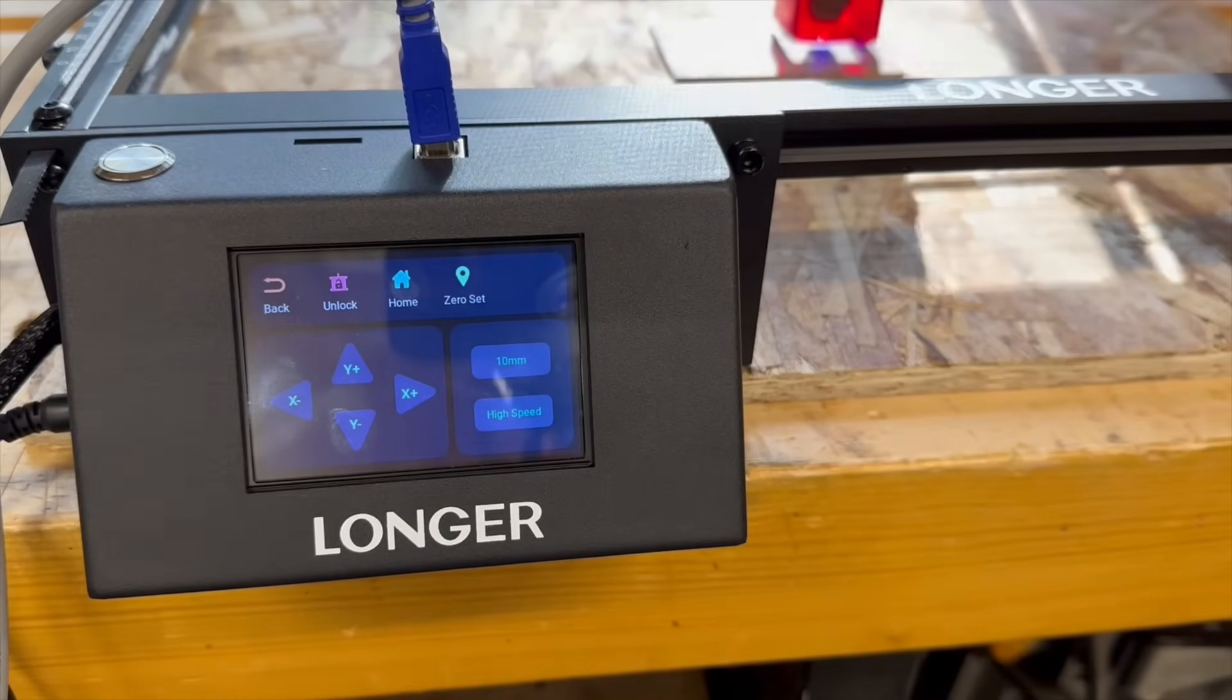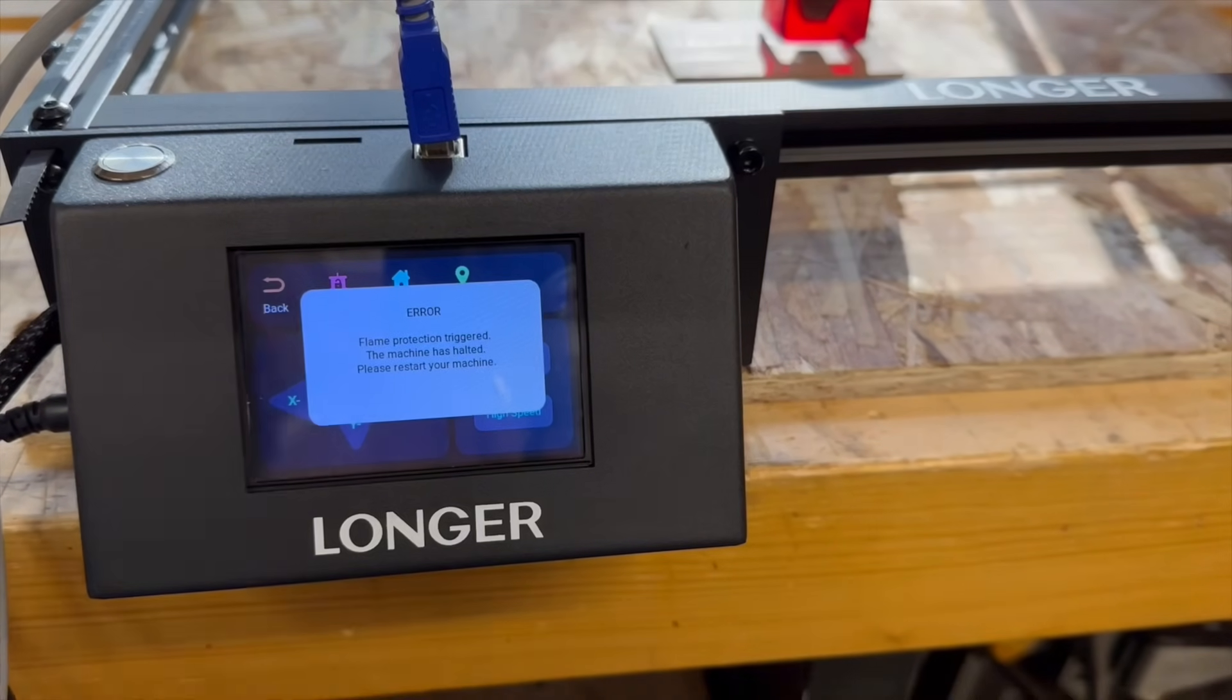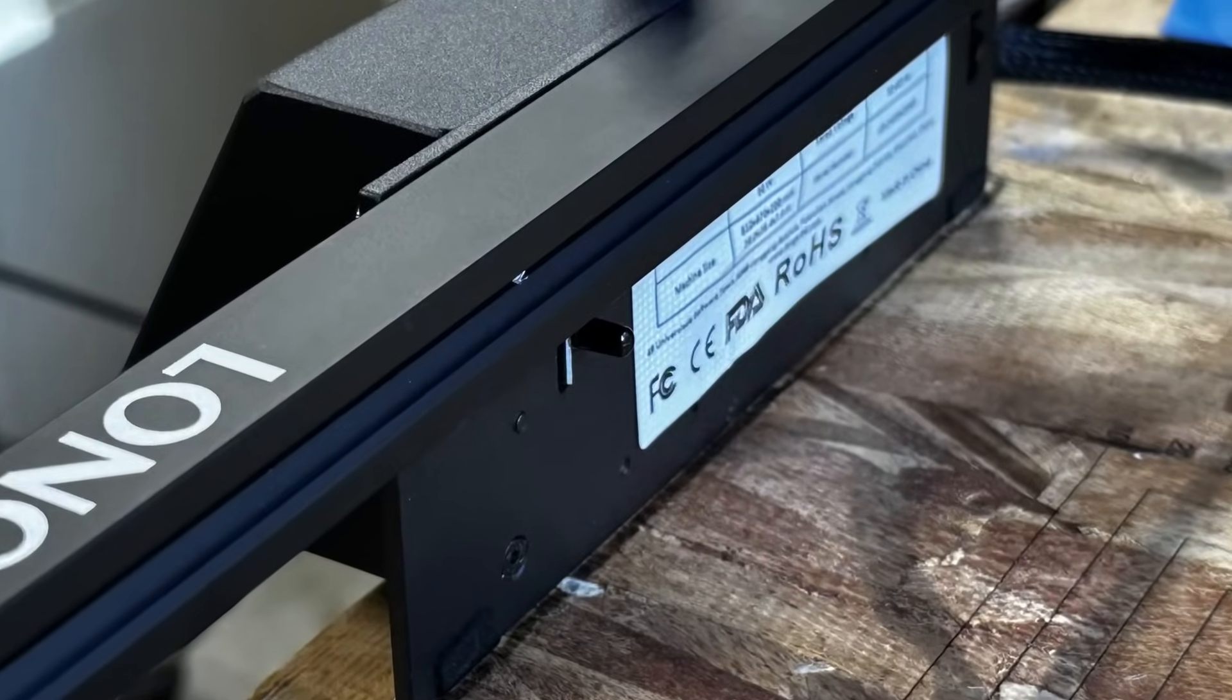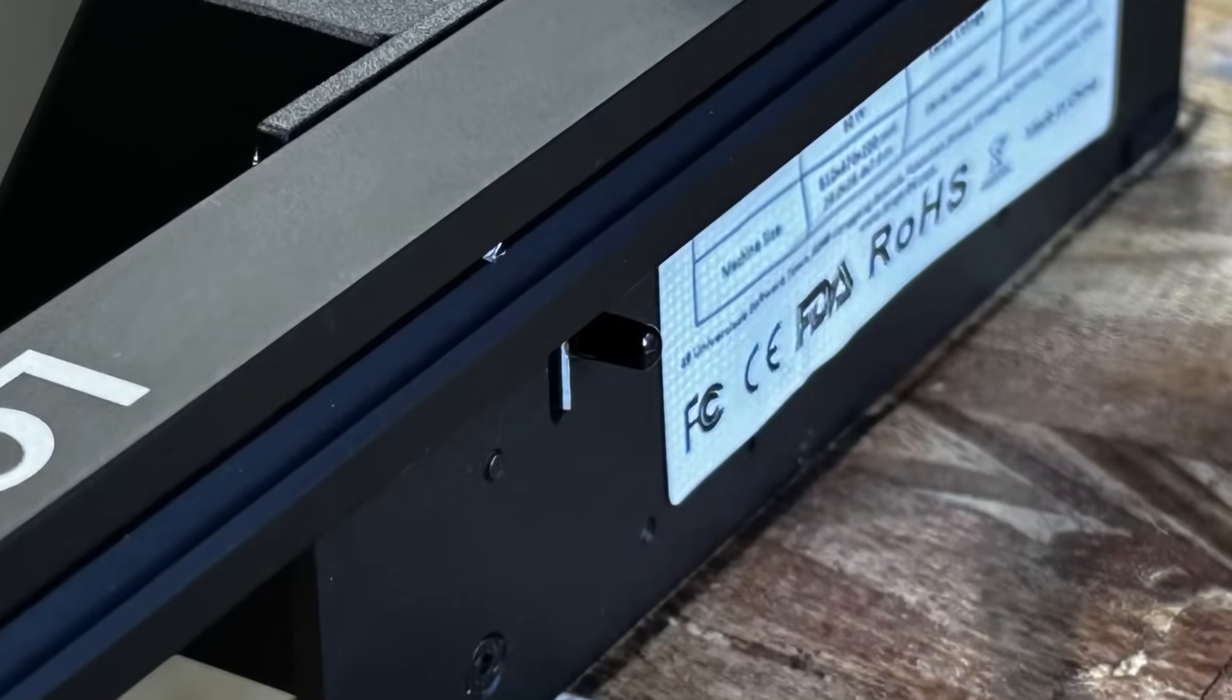However I learned during testing that bright sunlight will also do this. The flame sensor is located on the back of the control unit and you want to make sure it is both unobstructed and not in direct sunlight to work properly.